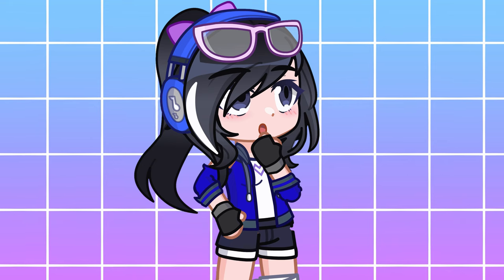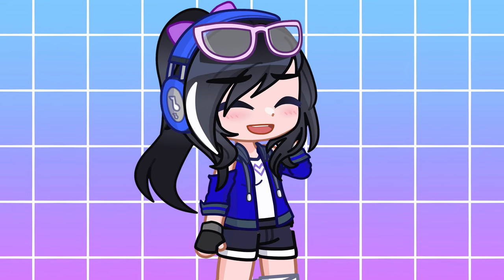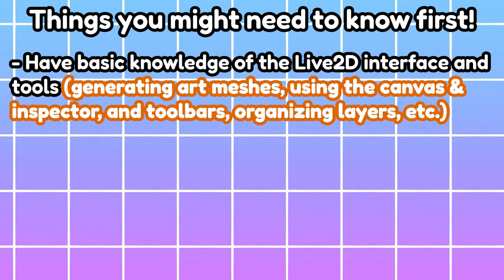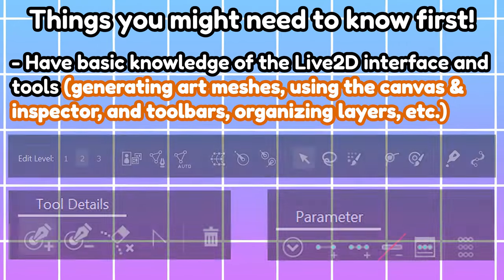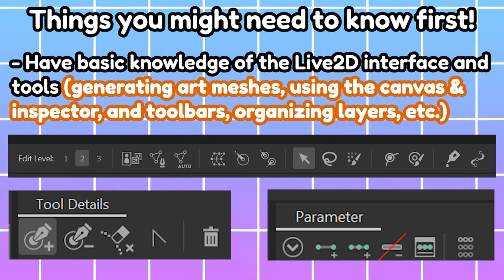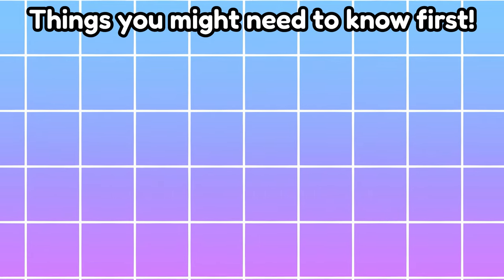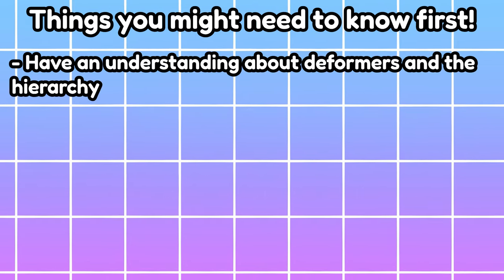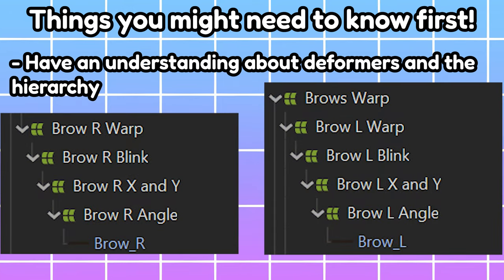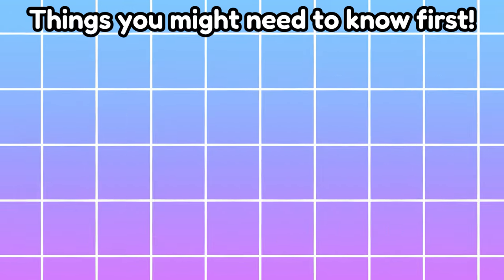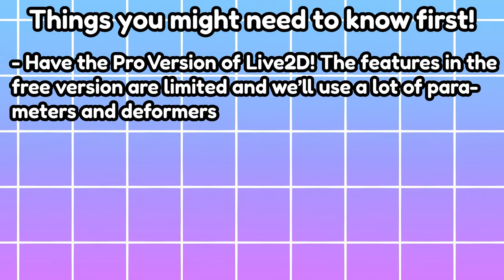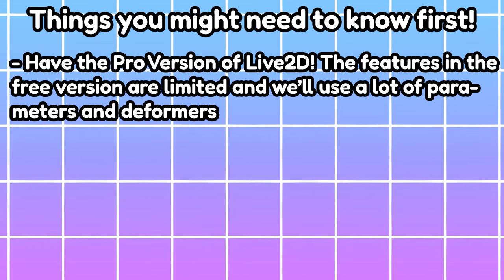Before we begin, there are some prerequisites you should be familiar with. You should at least have basic knowledge of the Live2D interface and tools, such as generating art meshes, using the canvas, inspector, and toolbars, as well as organizing layers. You should also have an understanding of deformers and their hierarchy, although I will be giving bits of insights about that when we get into the process. It's best if you use the Pro version of Live2D for this tutorial. While the free version can work, the Pro version offers more efficiency.